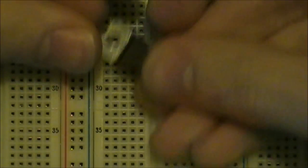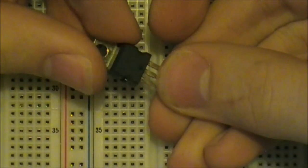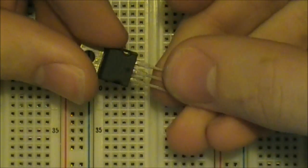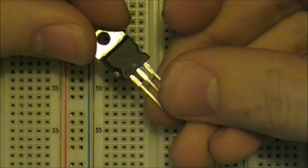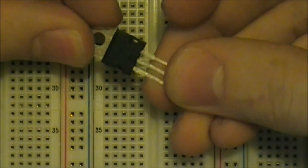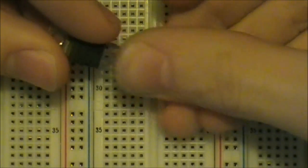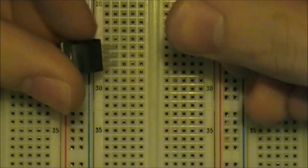So I'm going to start with the 7805, since it's a pretty big component. And it's always a good idea to stake out claim for the bigger components first. So I'll just start by inserting it right here.